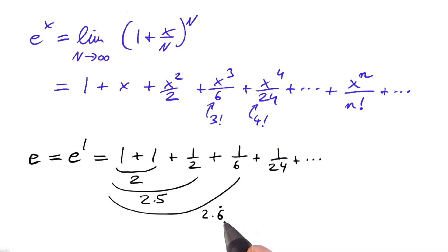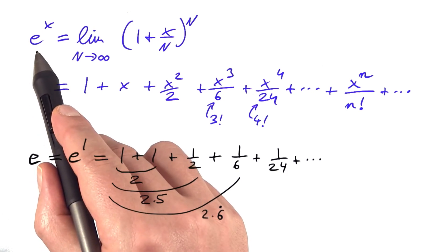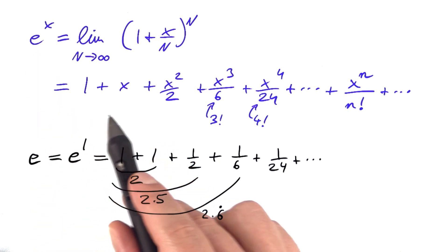You see, we're getting pretty quickly pretty close to 2.71 something. So if you actually want to compute Euler's number or the exponential function, you're using this power series.